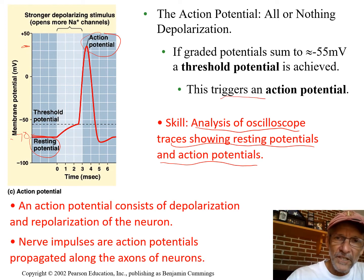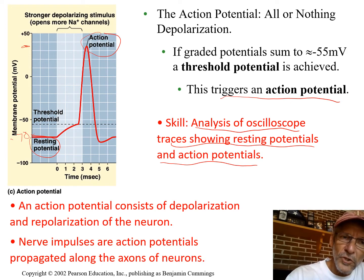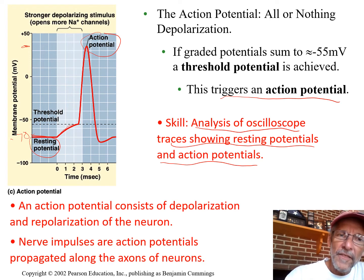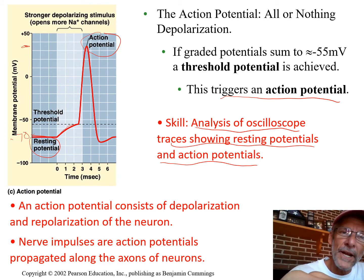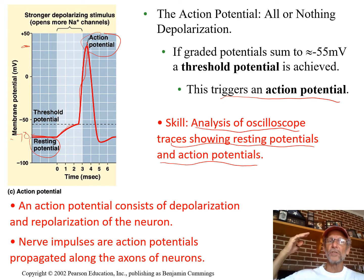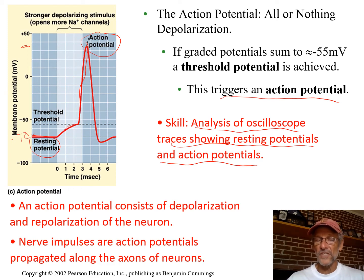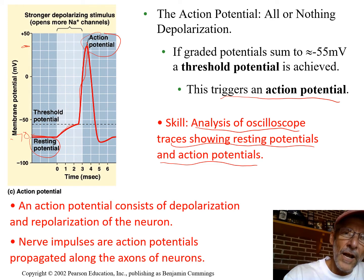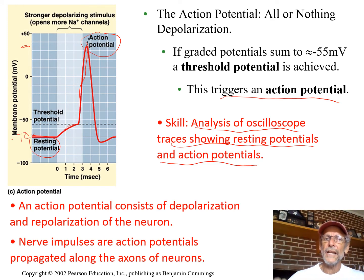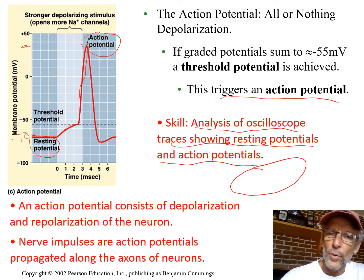What triggers this big spike is simply getting to the threshold. If the inside becomes 15 millivolts more positive than at rest — reaching negative 55 — that triggers a whole bunch of sodium gates to open. When they open, the inside becomes positive compared to the outside. So the nerve impulse begins with sodium gates opening, enough of them to reach negative 55, which triggers a whole bunch more to open in one local area.